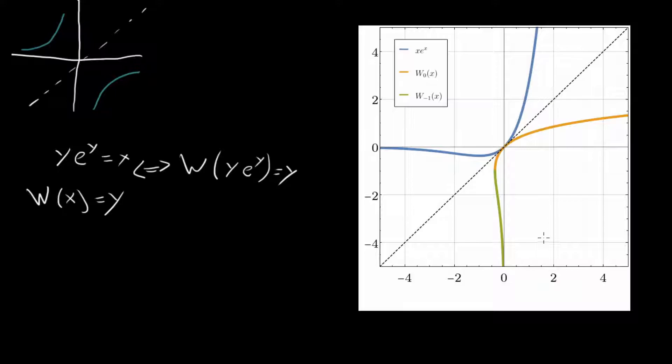And so that already tells us something important, which is that if we're looking for values, or if we're looking at negative values of the Lambert W function, we have to make sure we choose the right value. Because we can pick either W0 or W minus 1, so long as it's within this range right here.